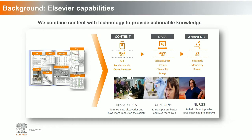As we all know, Elsevier is a publisher, but we also provide answers to researchers so they can make new discoveries — in the form of articles they can read, but also by extracting knowledge and data from the literature. We have been doing this manually for a long time. On top of that, we are also using this data to build predictive models so that we can answer accurate questions and better improve your predictions or answer your query in a better way.